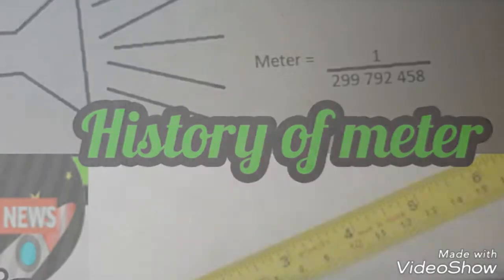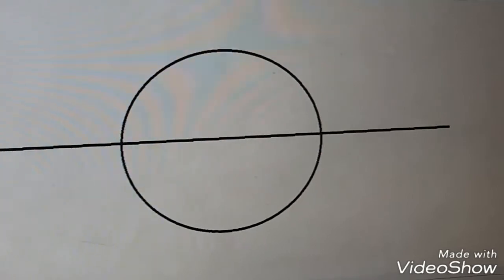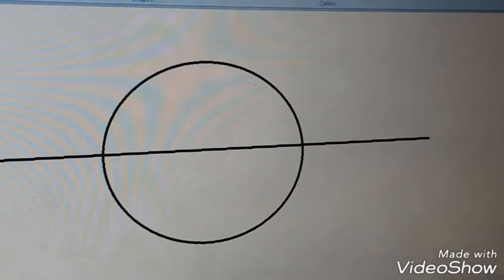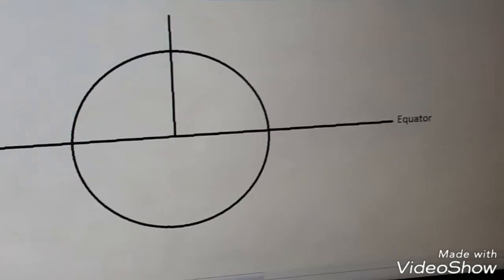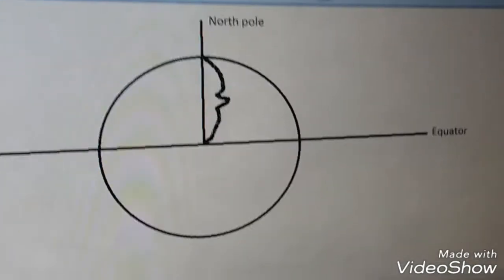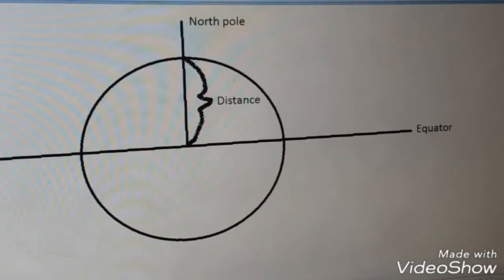In 1792, Republic of France established a new system of weights and measures. Its cornerstone was the meter, defined to be 1/10 millionth of the distance from the North Pole to the equator.